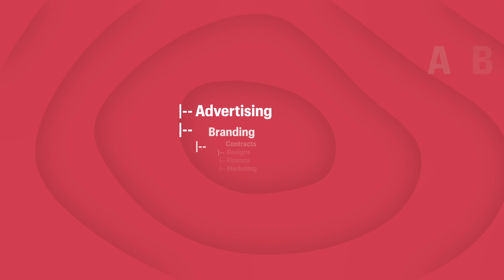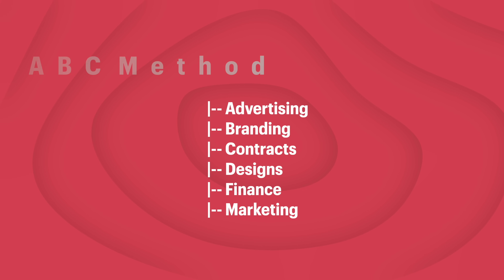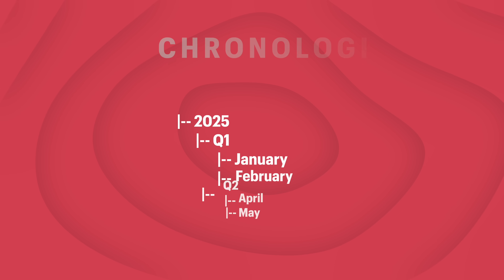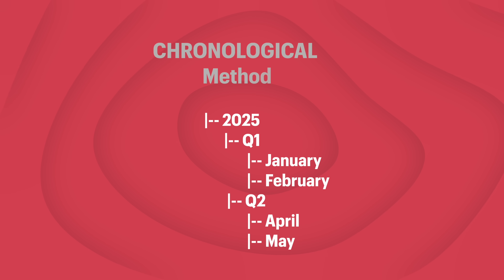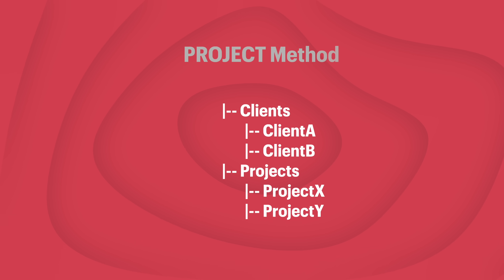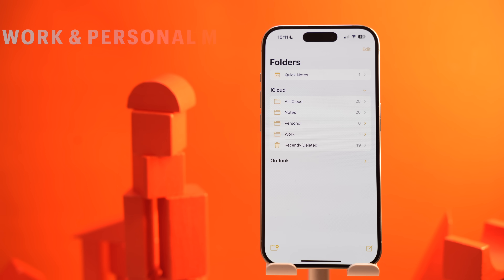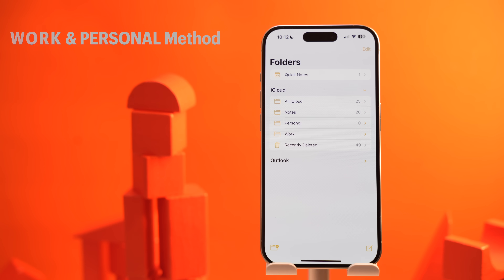There are multiple ways here. The ABC method, where you create folders for alphabetical categorization of your note titles. There is the chronological method, where you create folders for years and then months, and then notes within them. Or the project-based method, where each note belongs to a certain project.